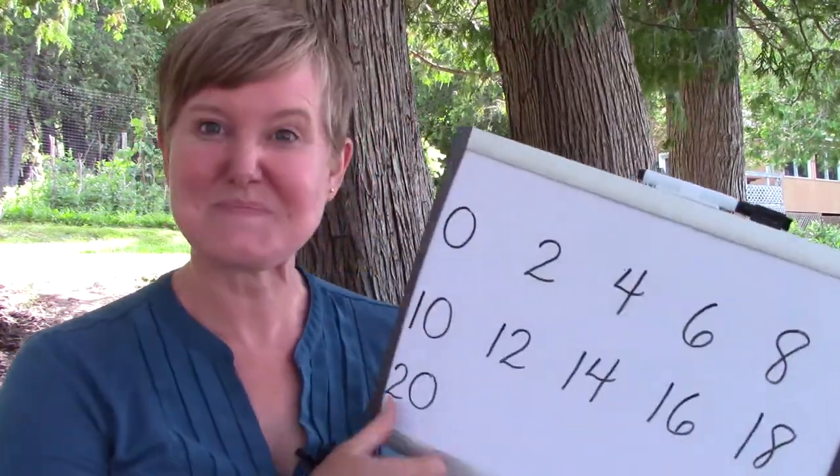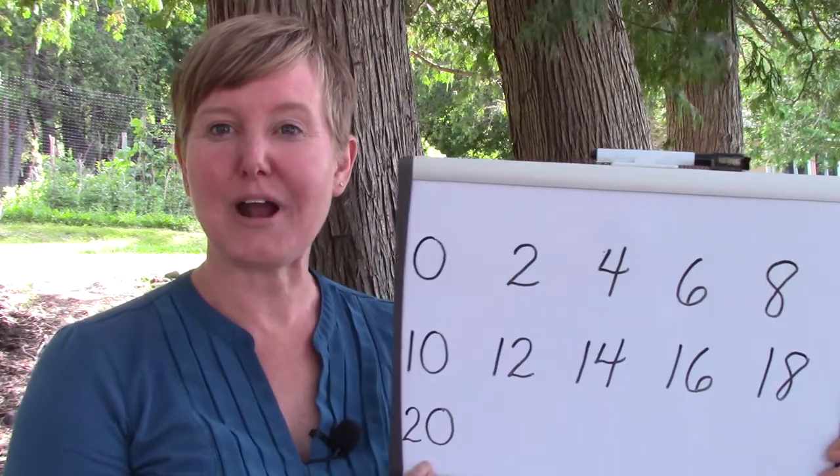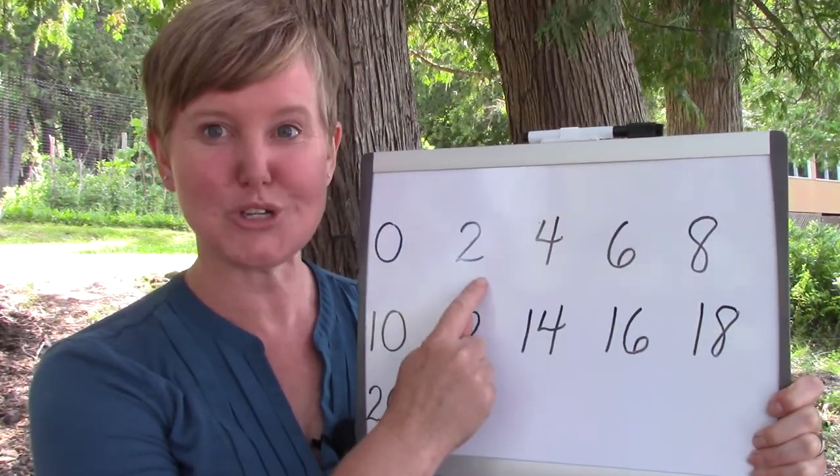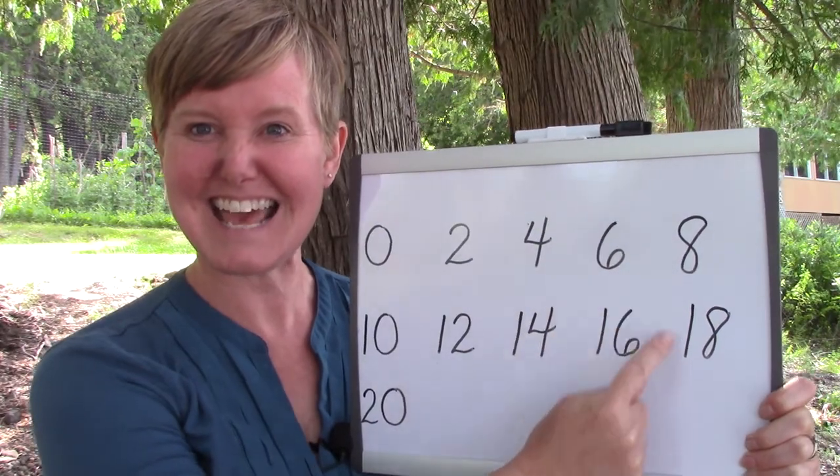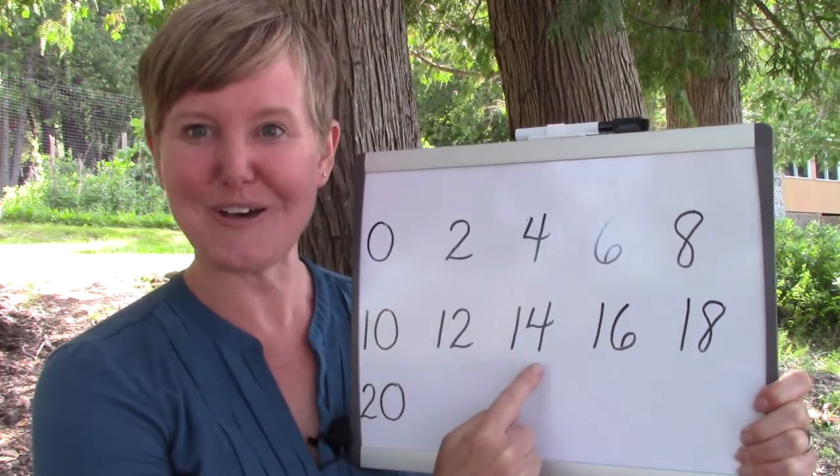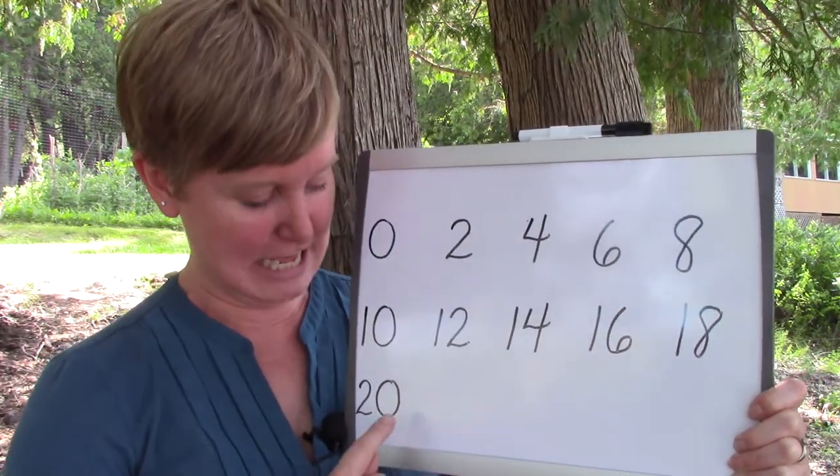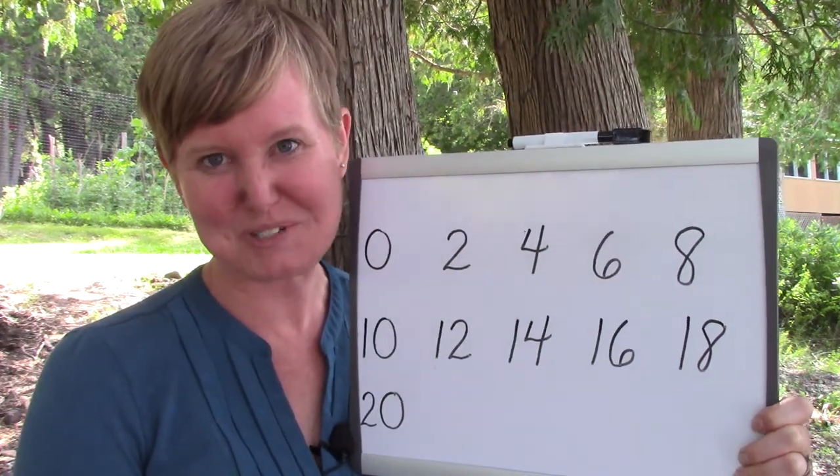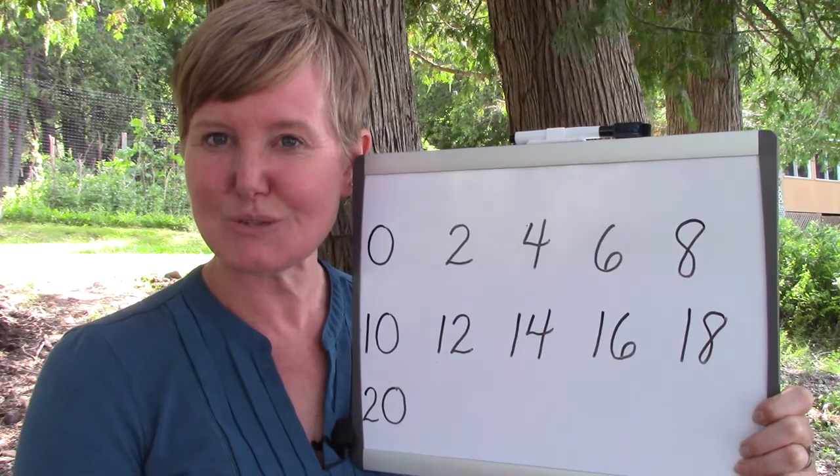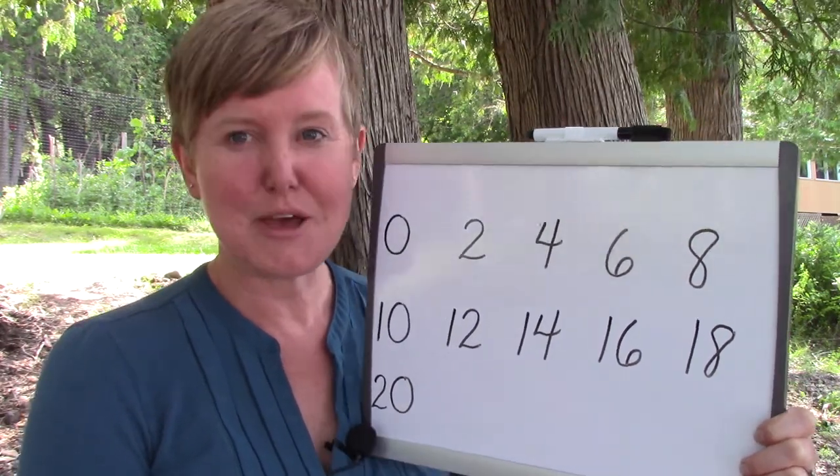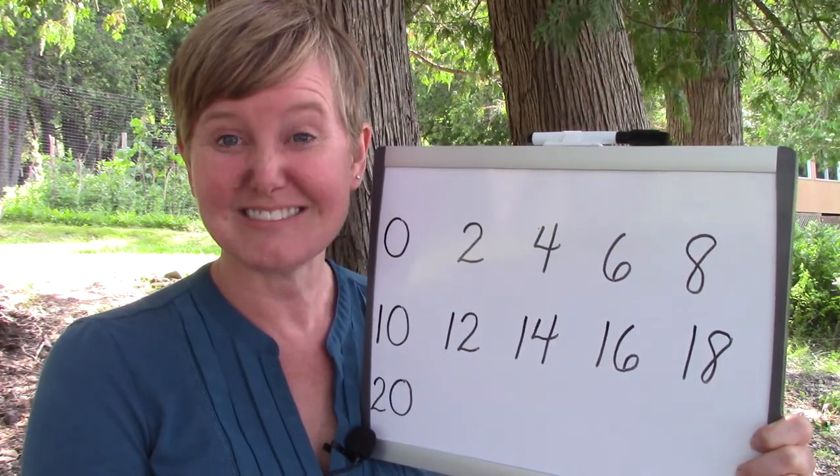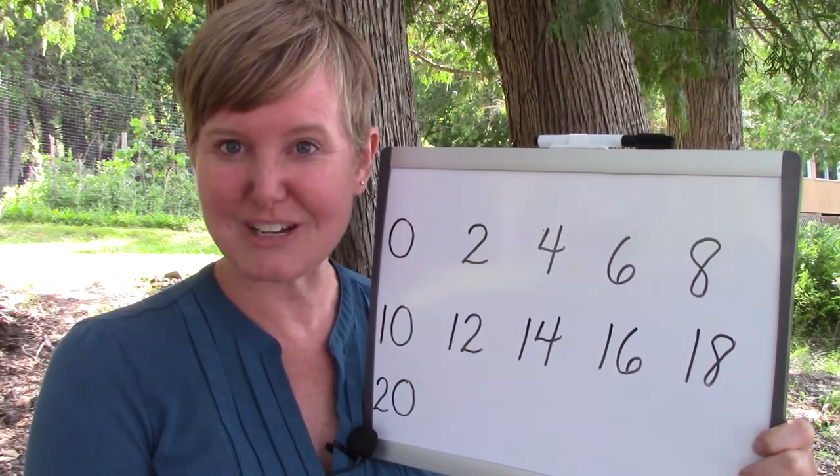I have a board here that I'm going to have you take a look at. On my board I have written the numbers 0, 2, 4, 6, 8, 10, 12, 14, 16, 18, and 20. Those are not all of our counting numbers. Do you see that there are some numbers that are missing? But I bet that these numbers look familiar. Do you remember our skip counting song?